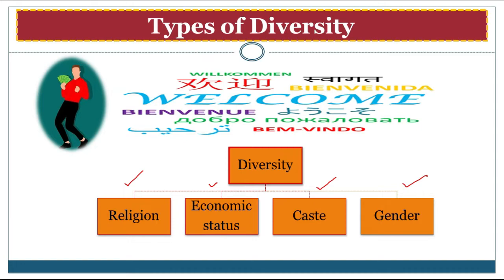This discrimination can result against the unity of the country. Next is economic status — meaning the money or wealth people have. In a country the wealth is not equally distributed. According to one survey, approximately 80% of India's wealth is in the hands of only 10% of the population, so here we can see diversity in wealth.